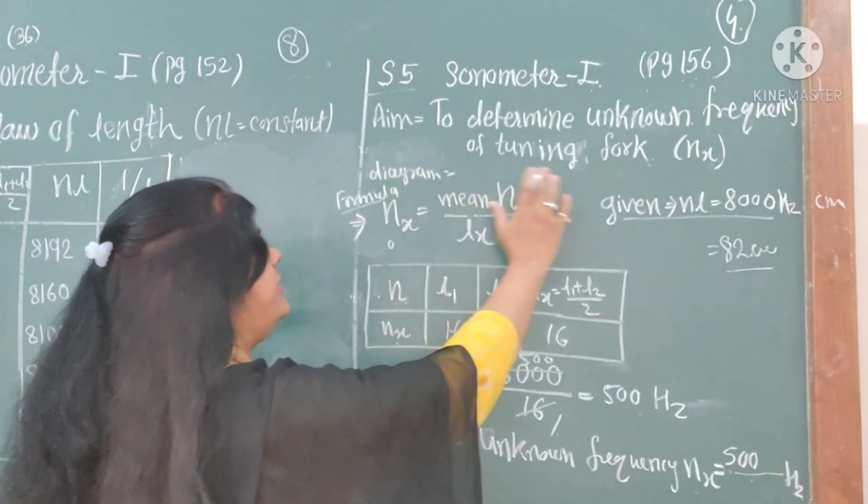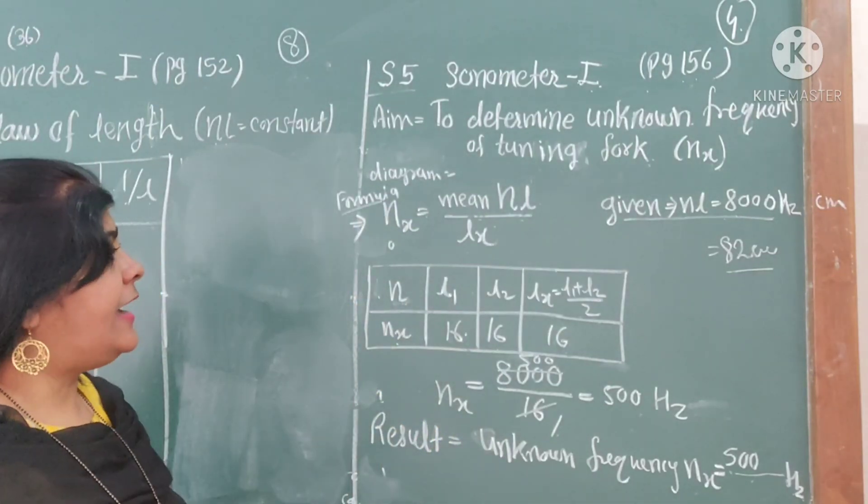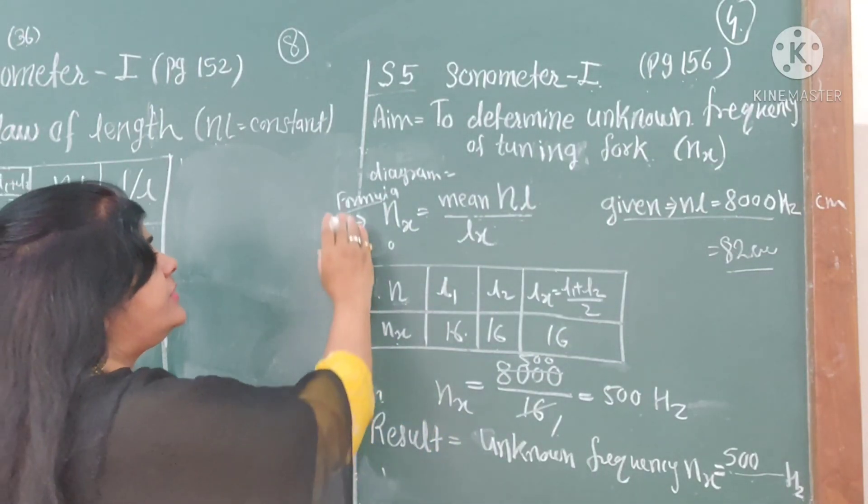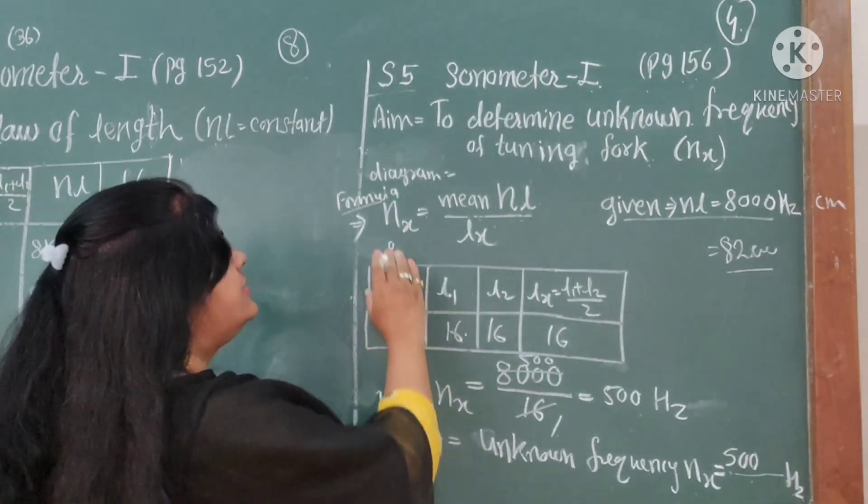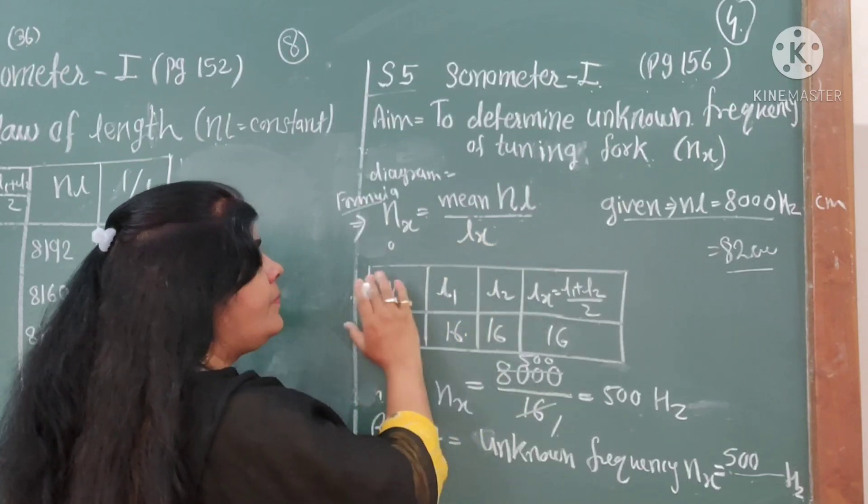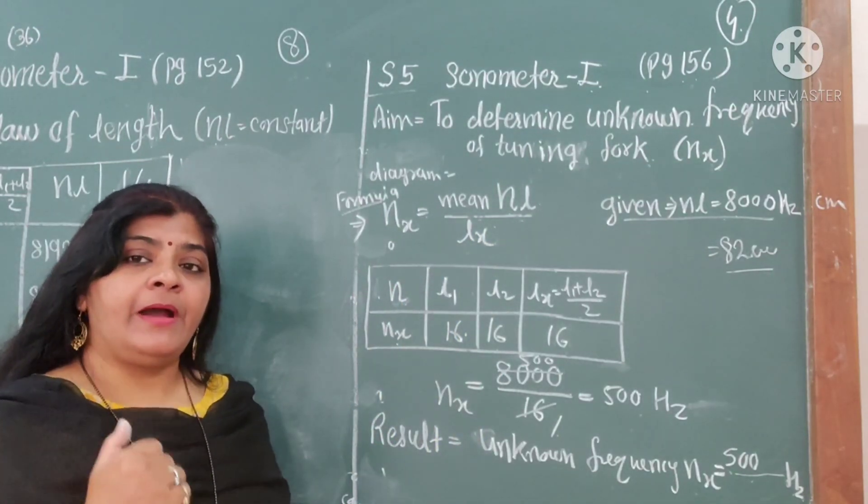Next, write the aim. After that write the apparatus and the diagram. After that write the formula. The formula related to this is the unknown frequency formula, which is mean NL divided by LX.